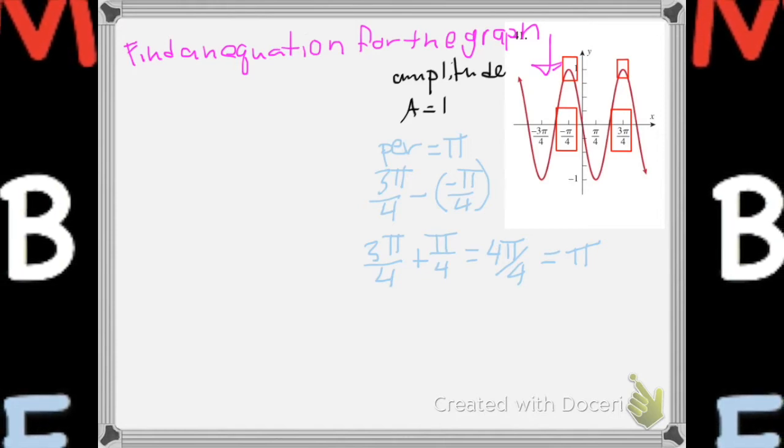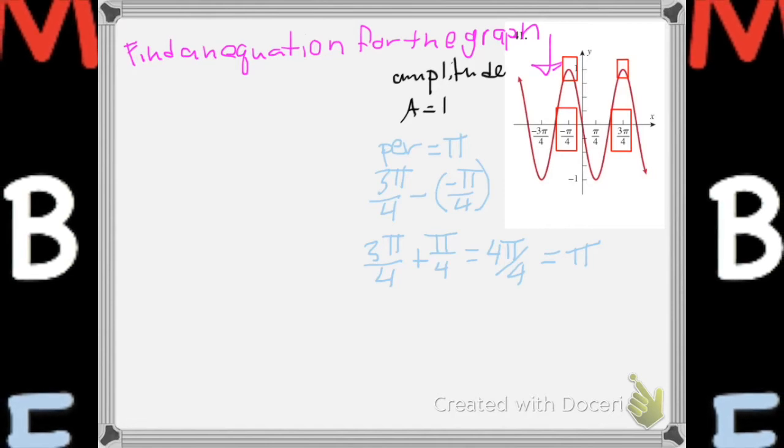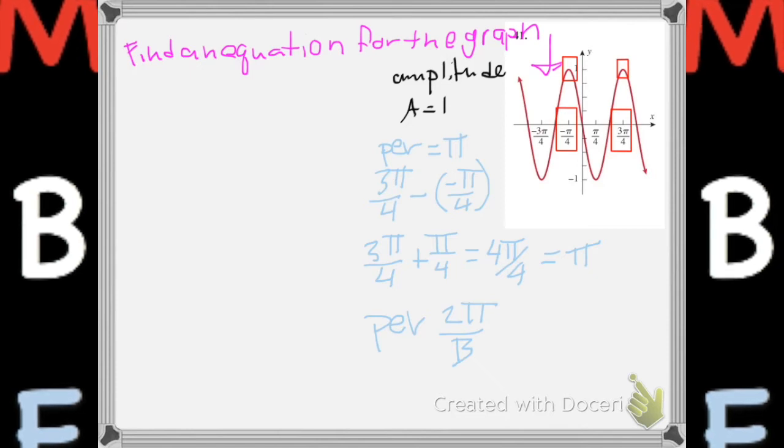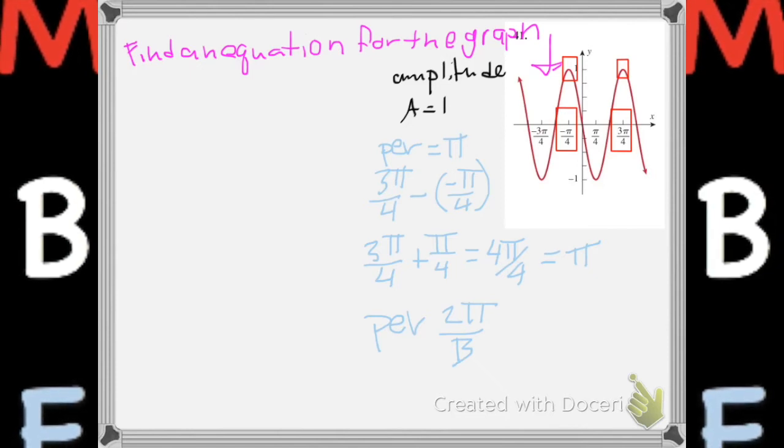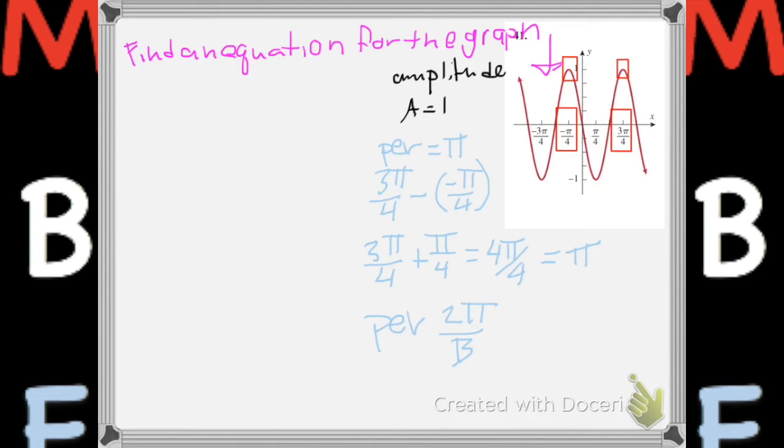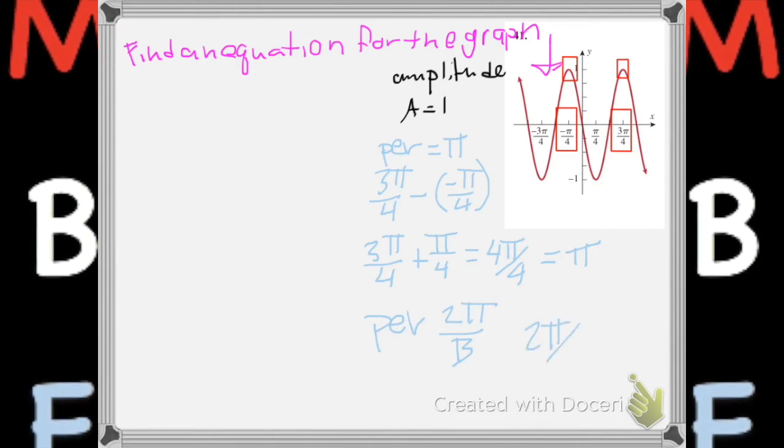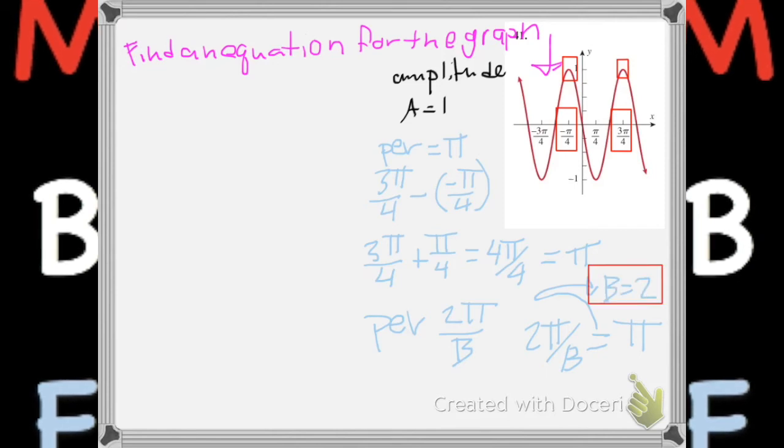No matter where we perform our period, it's gonna be π. So since our period for sine or cosine is 2π over B, then we can let 2π over B be π, and then B be 2. Some algebra happened.